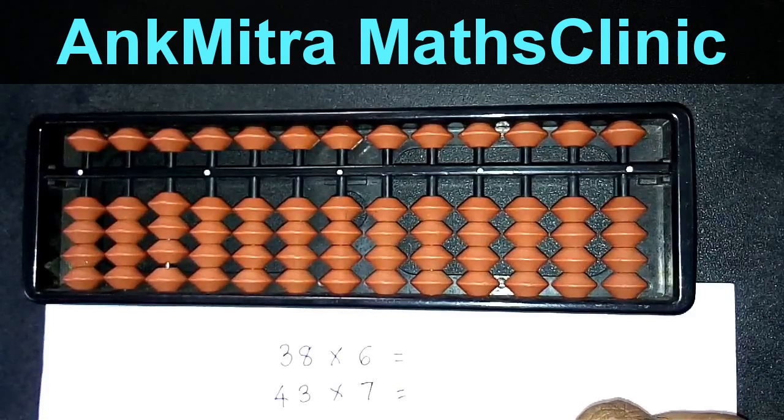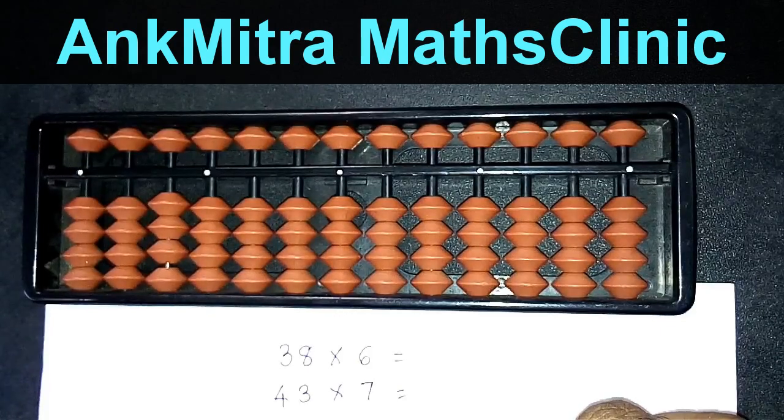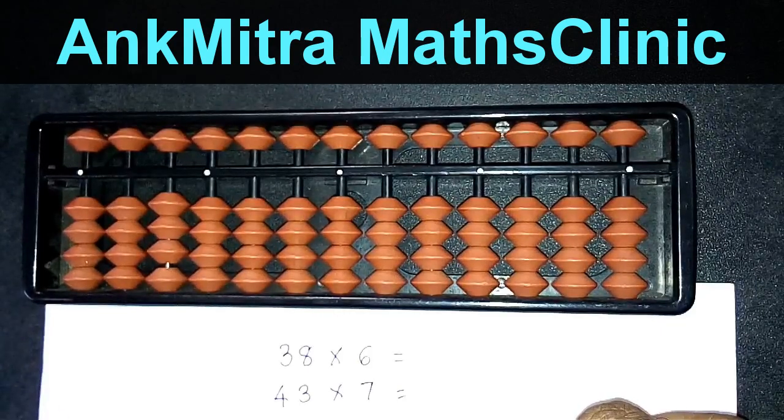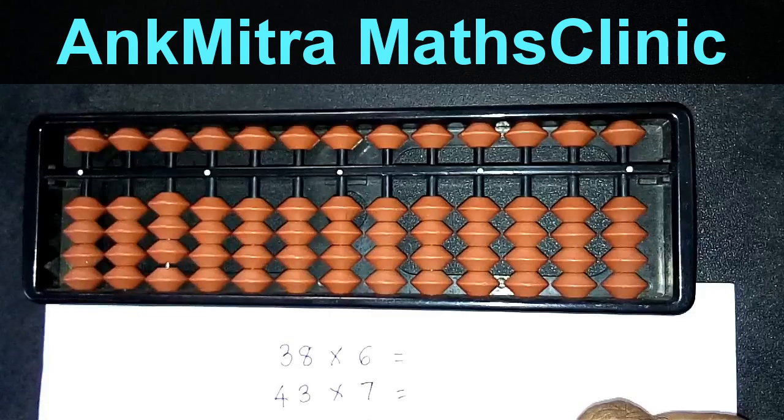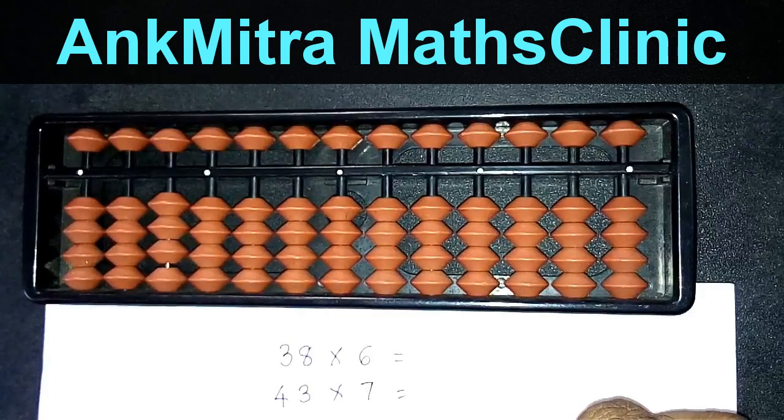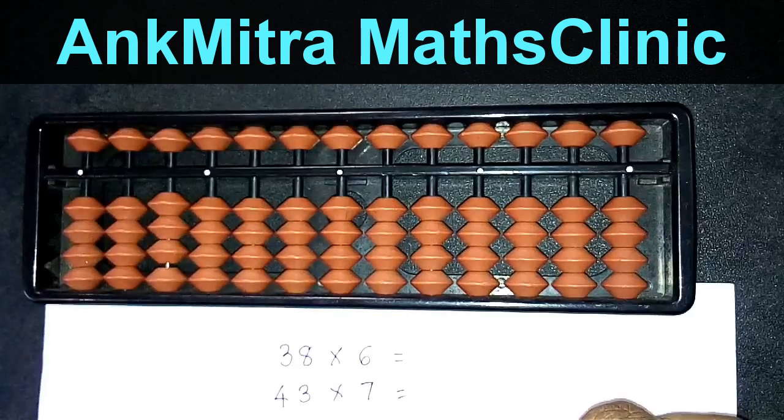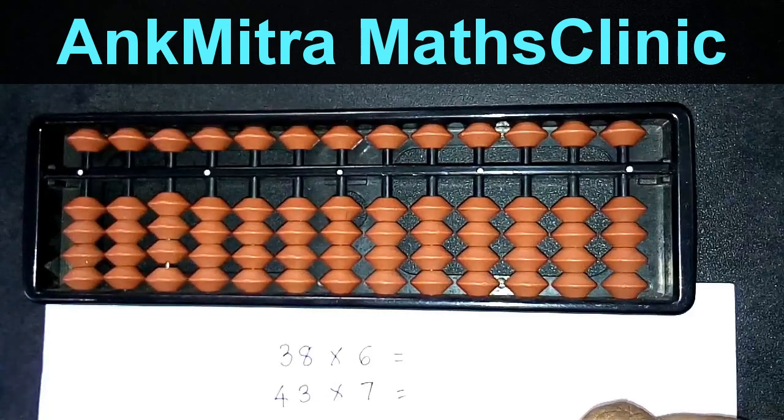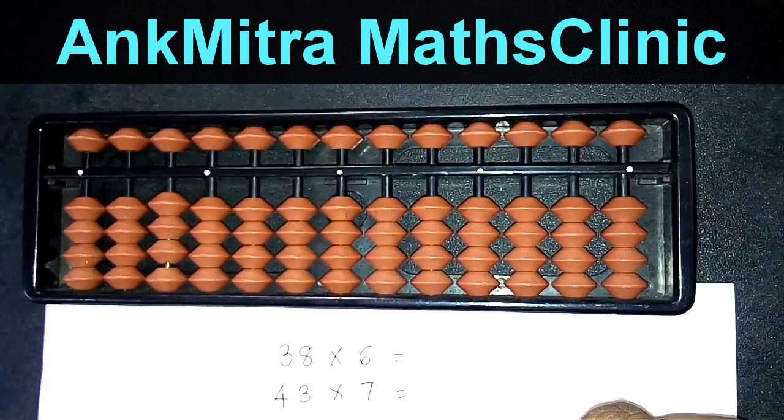He should not need to recite the entire table. Suppose he is asked something like 4 eights are, and he needs to start with 4 ones are, 4 twos are, and so on. He needs to be ready with 4 eights are equal to 32. So tables up to 9, the student needs to be ready very well.